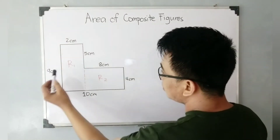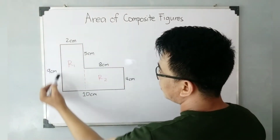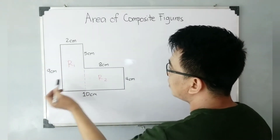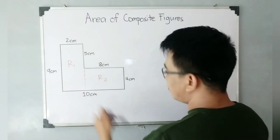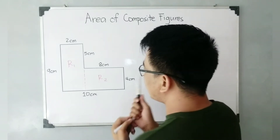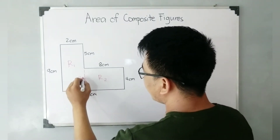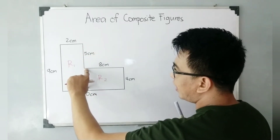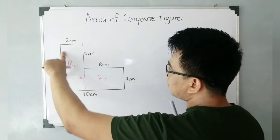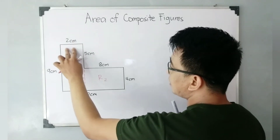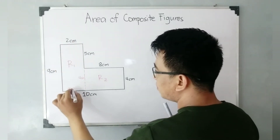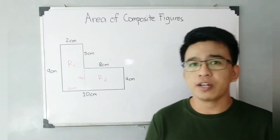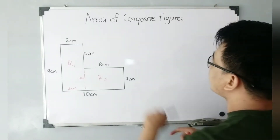This side is nine centimeters. Let's focus on Rectangle Number One — this is nine centimeters, this one is five, and I can say that this imaginary side is four centimeters because this side and the imaginary side are equal. Also, this side is two centimeters, therefore this one is also two centimeters.